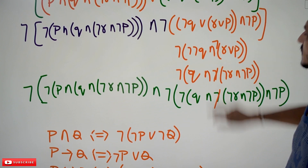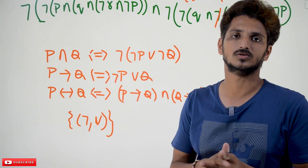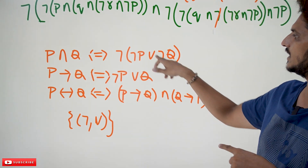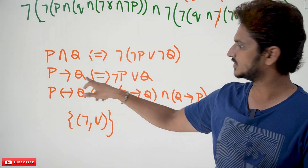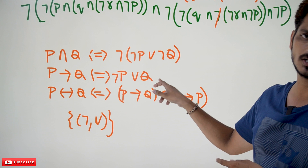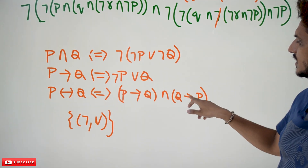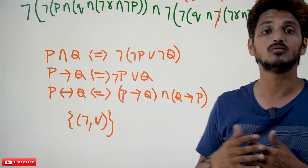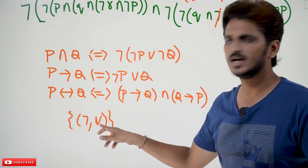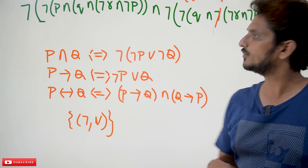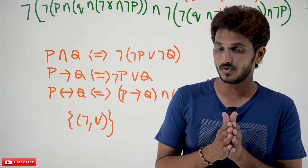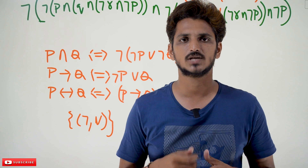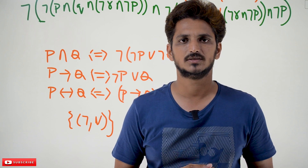Similarly, we can convert the entire equation into the form of negation and disjunction as well. If you have conjunction, the equivalent is: negation of (negation p disjunction negation q). If you have p implies q, it can be written as negation p disjunction q. And p double implies q becomes (p implies q) conjunction (q implies p), which is again converted using negation and disjunction. Take the same example and try to convert it into negation and disjunction as practice. If you have any questions, please post in the comment section below. Thanks for watching — please subscribe to our channel and press the bell icon for the latest updates.